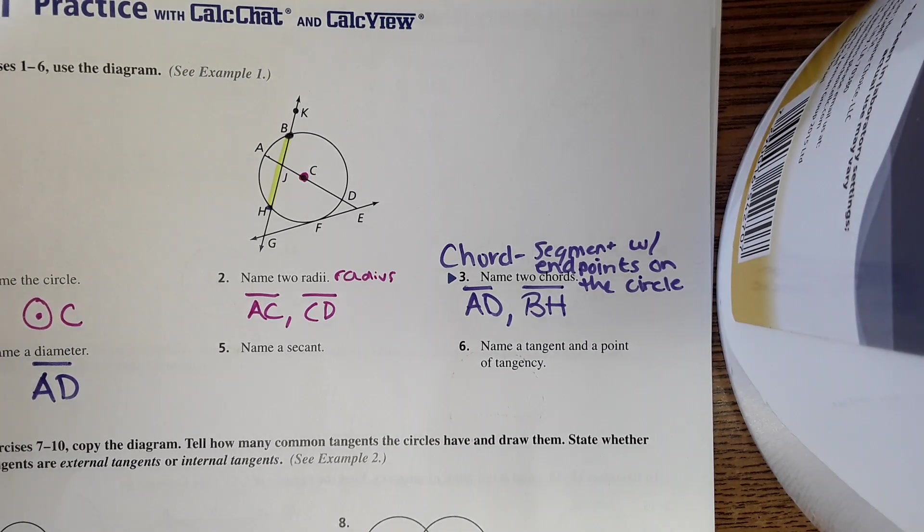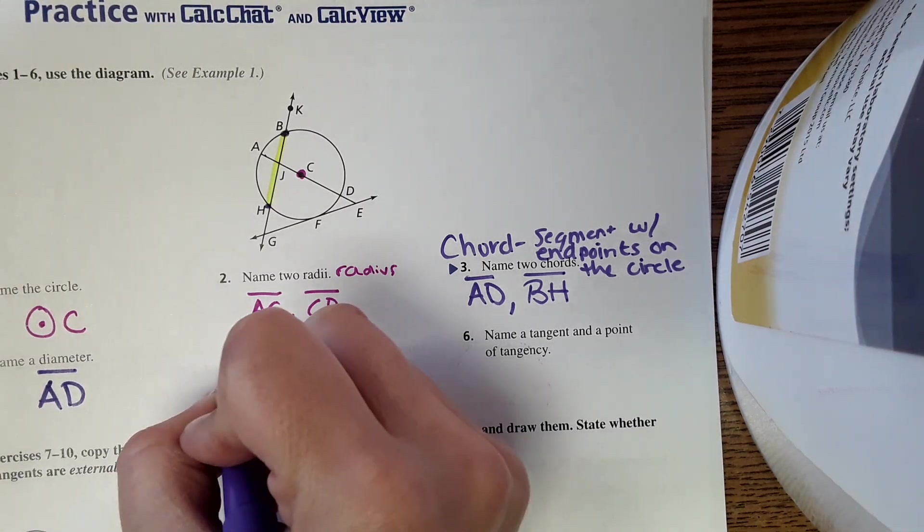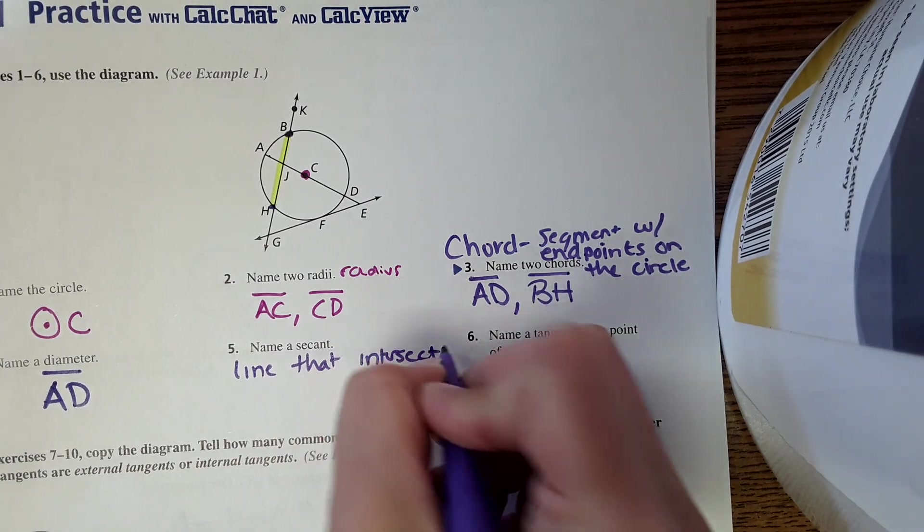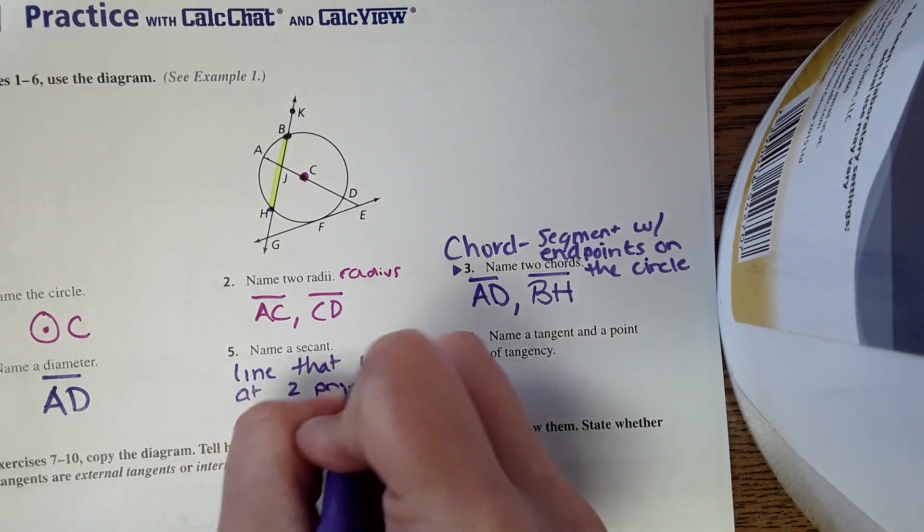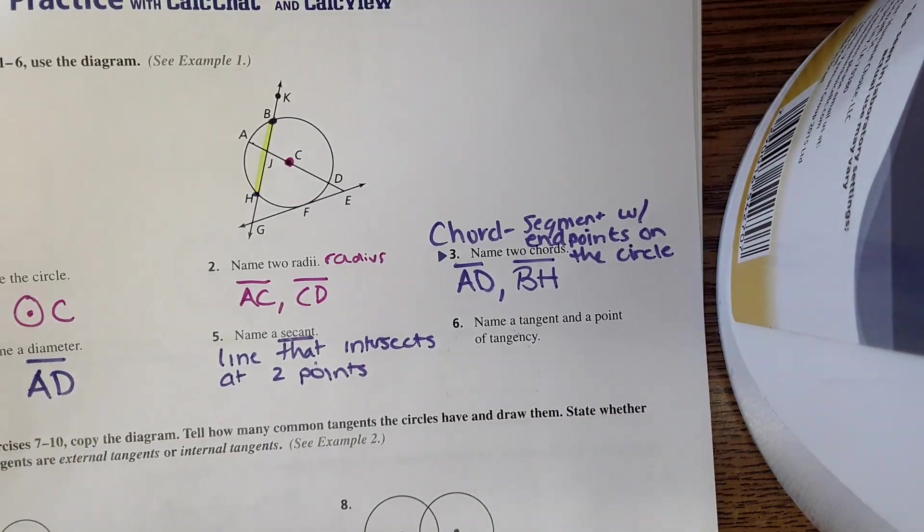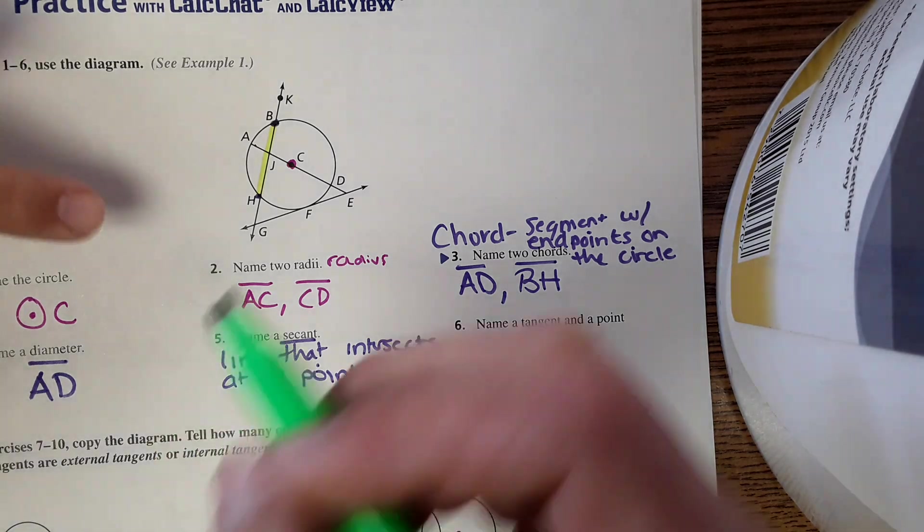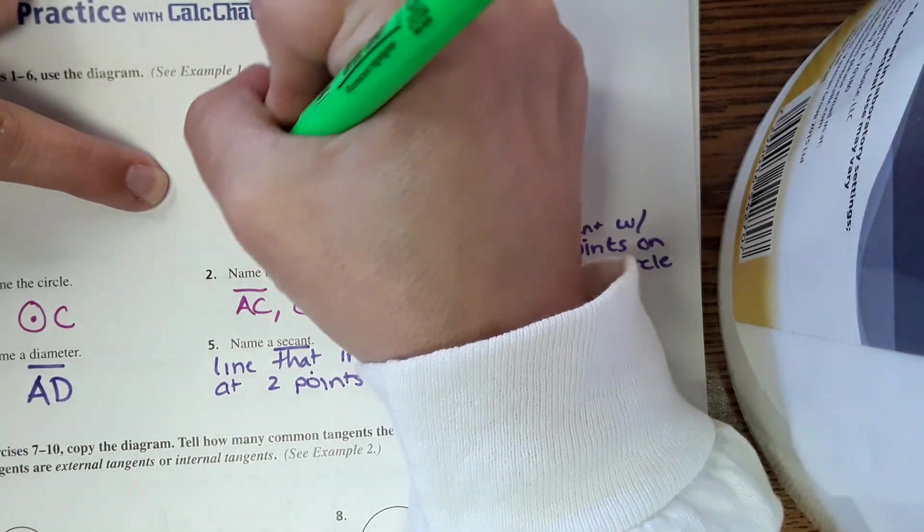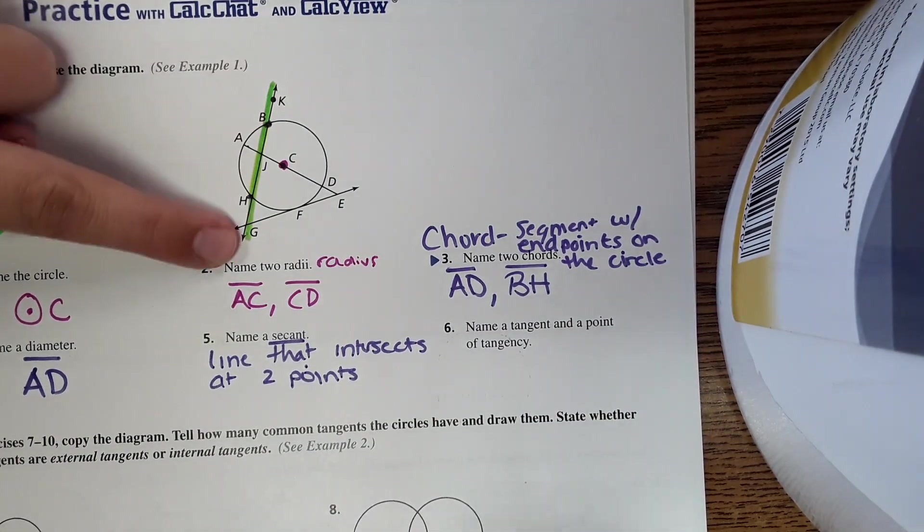Another new word, secant. A secant is kind of like a chord, but it's actually a line that intersects at two points on the circle. So a secant would be this entire line. The chord is just the segment, but the secant is the whole line. So we could say this is line KG.